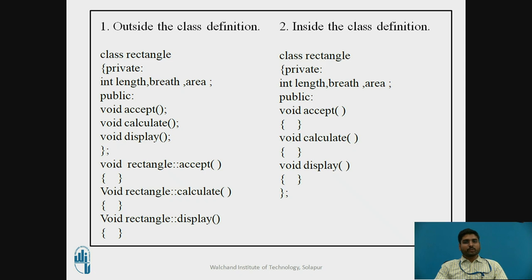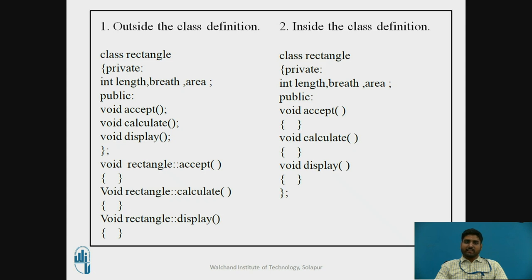Using the scope resolution operator, we write the function body with cout and cin. In void rectangle we can calculate there, and using void rectangle we can display the output. This shows the outside the class definition approach.